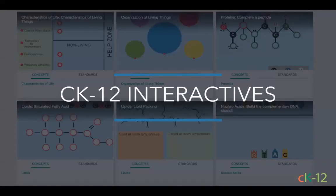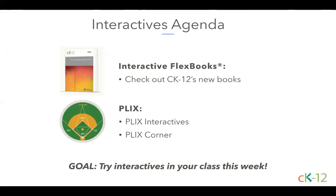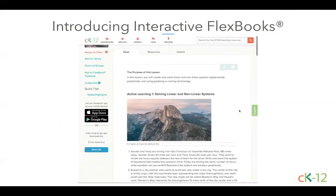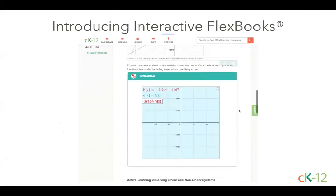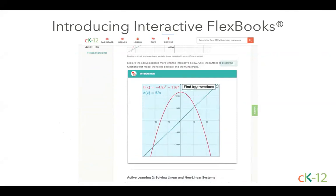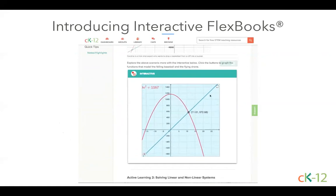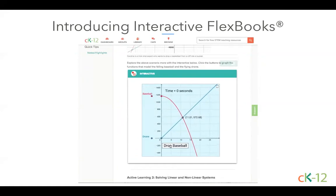Now let's move on and discuss interactives. In this first section of the webinar I'll introduce CK-12's newest books, the Interactive FlexBooks. Next, let's talk about PLIX interactives and PLIX Corner. Our goal is to get you ready to try interactives in your class the first week of school. CK-12 recently released Common Core aligned FlexBooks, a line filled with interactives. This is a section from the Algebra 1 book. Students can read through the text, look at pictures, and manipulate graphs, figures, and equations without having to leave the book. The interactives are designed to be an integral part of the lesson, not just supplementary. This is cutting-edge online textbook technology.